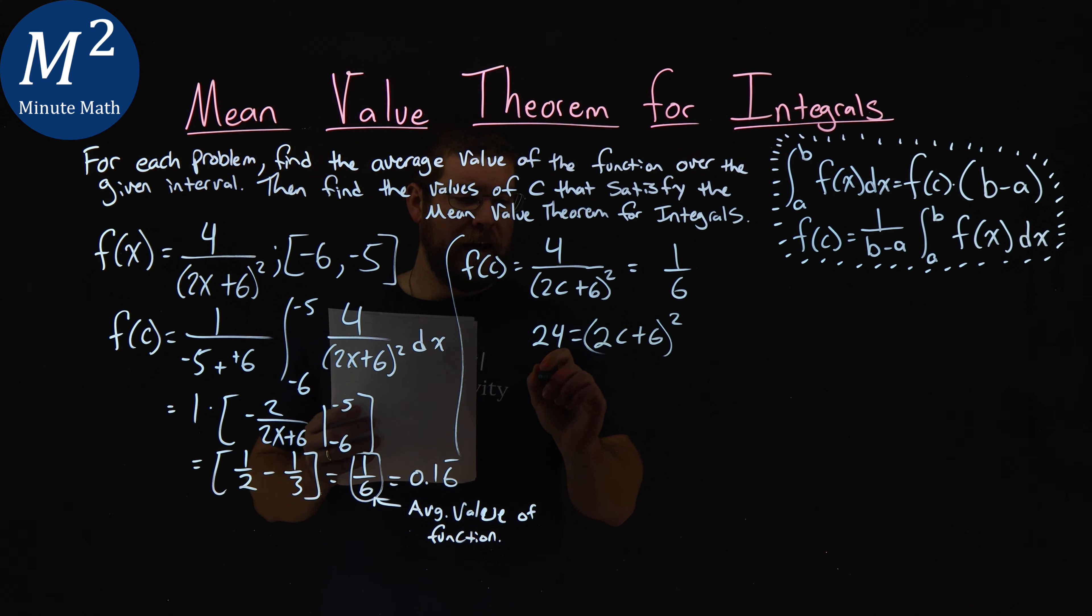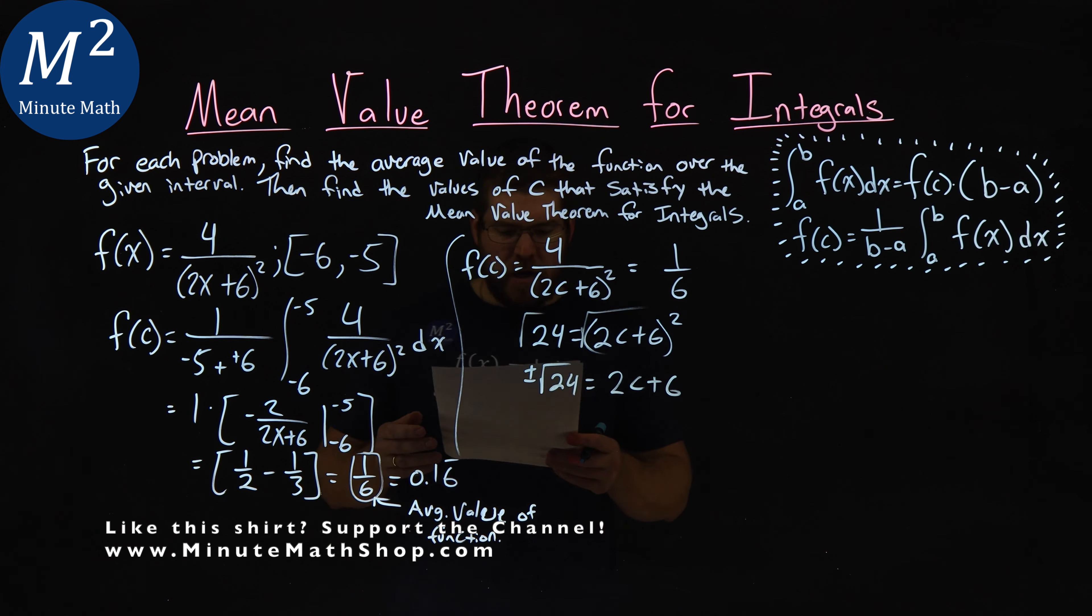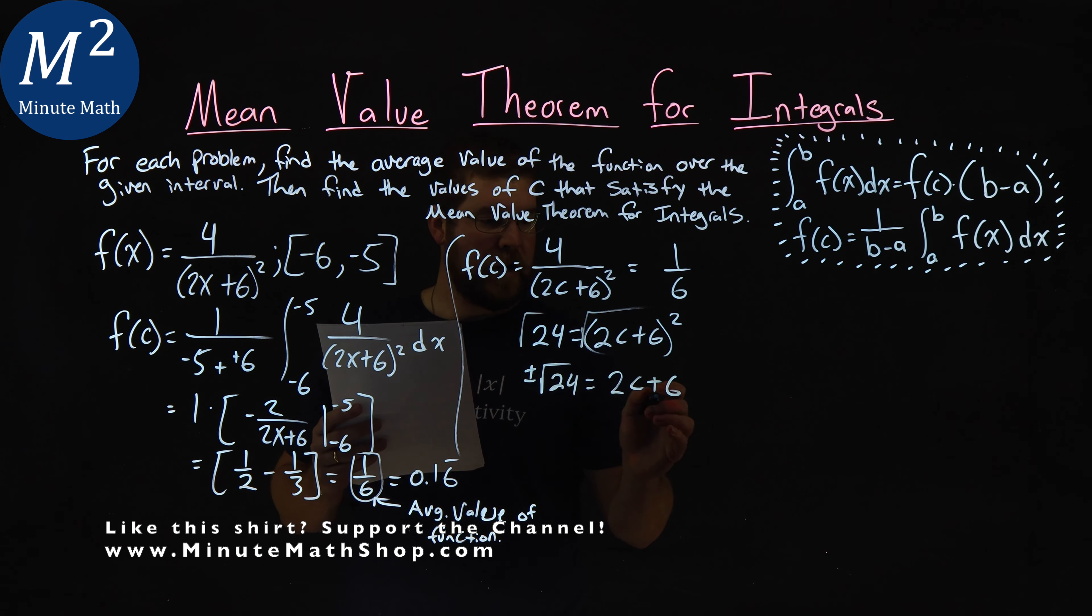Square root both sides, and we have a, I'm going to flip it here. Well, I'll do it first. Plus or minus the square root of 24 equals a 2c plus 6. Don't forget the plus or minus there, okay? When I flip it around, I'm going to subtract a 6 to both sides.